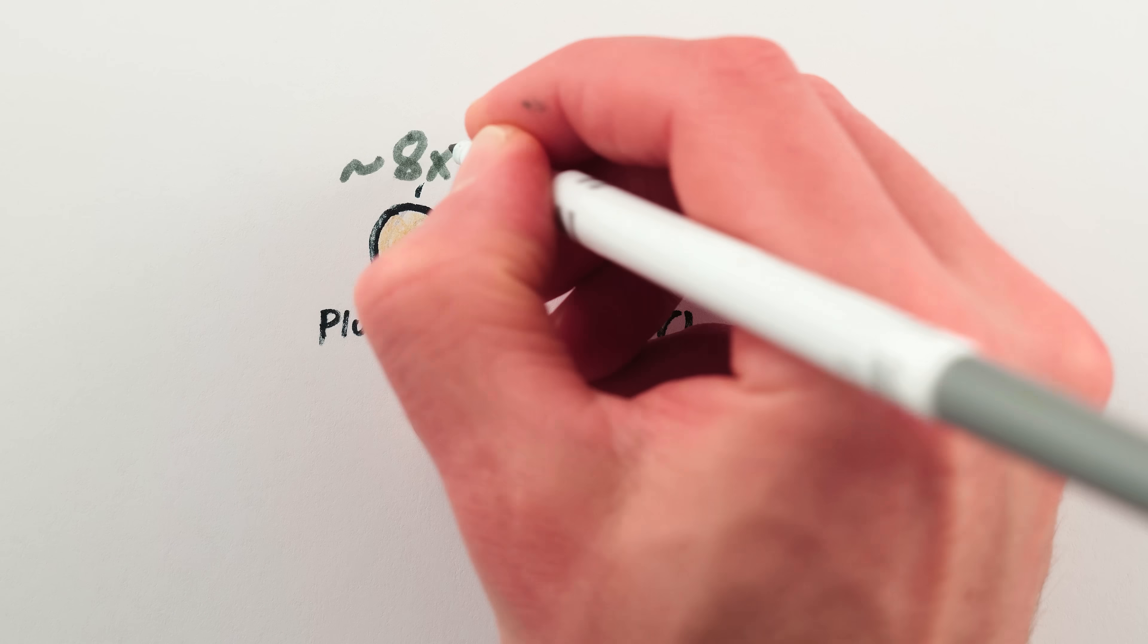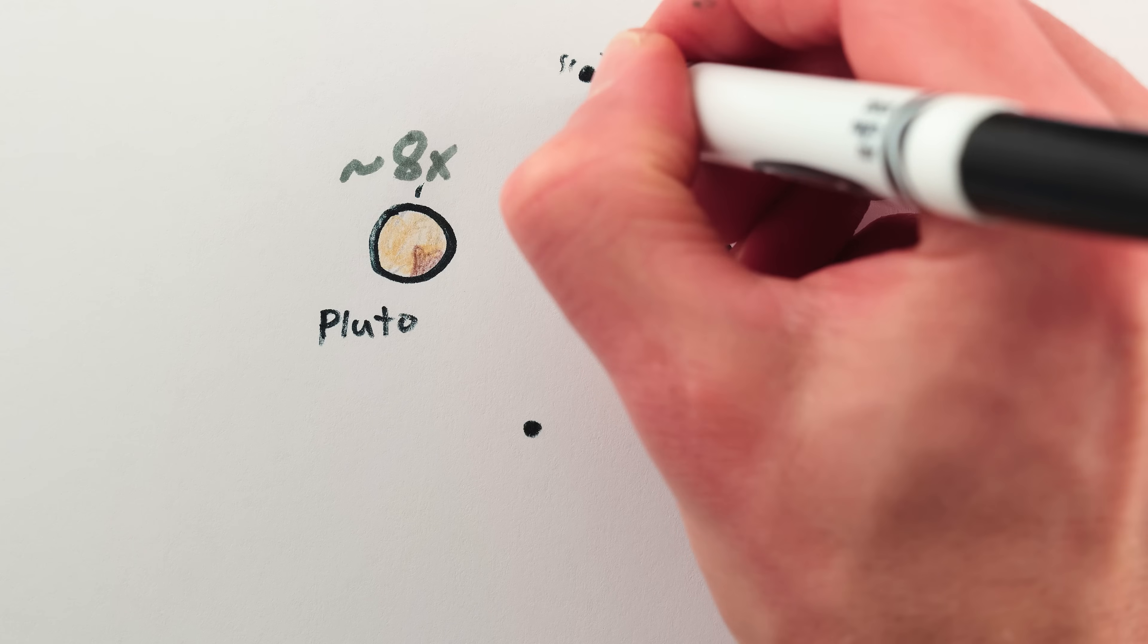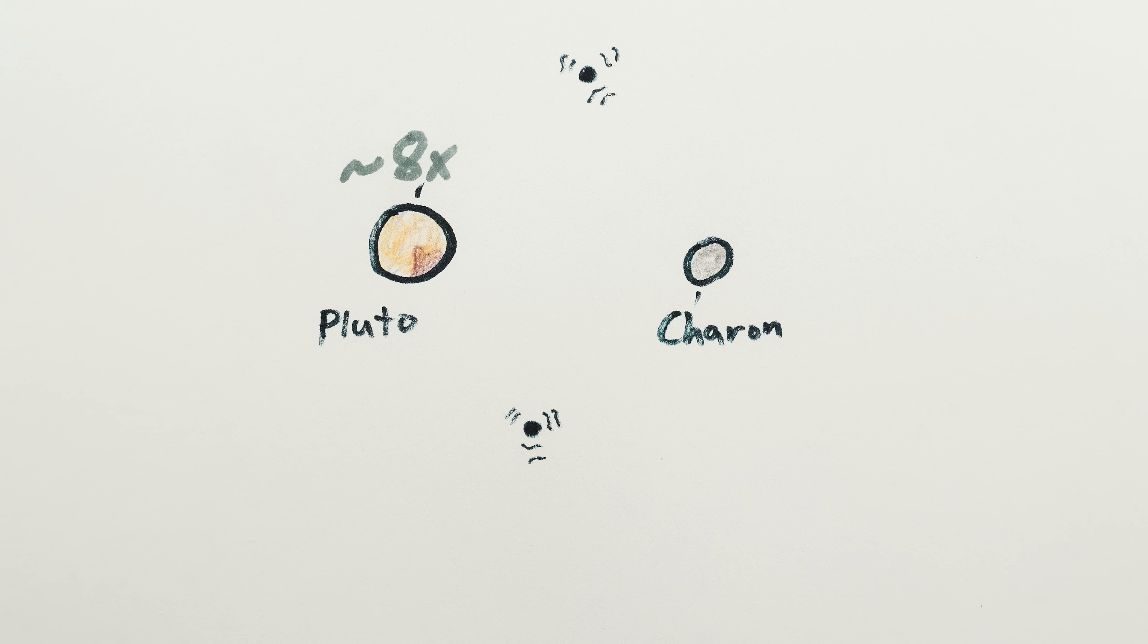In contrast, Pluto is only around 8 times more massive than Charon, so Charon can't have Trojan asteroids and therefore, according to the Trojan test, the two are a binary planet.